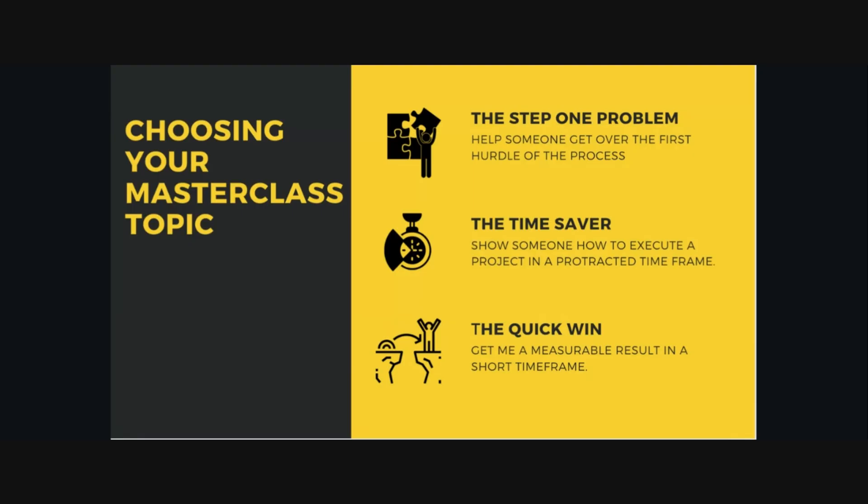That's one idea for how to come up with a topic — what is the first step folks need to take? Maybe you already have online courses that haven't sold well. In those courses, what's the first module? What's the very first step your audience must take? The second way to come up with your workshop idea is to think about the time saver: is there a way you can help your audience save time?